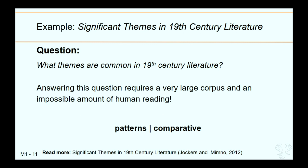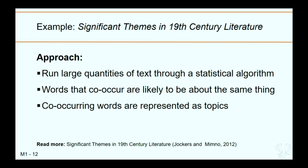The next example explores the question: what are themes common in 19th-century literature? This question is impossible to answer through human reading alone because you'd need to read a very large corpus of 19th-century literature. Matt Jockers and David Mimno explored this question in their 2012 paper. It involves recognition of thematic patterns and comparative analysis. They ran large quantities of text through a statistical algorithm to discover what we call 'topics' — this is topic modeling, based on the idea that words that co-occur are more likely to be related to the same thing.